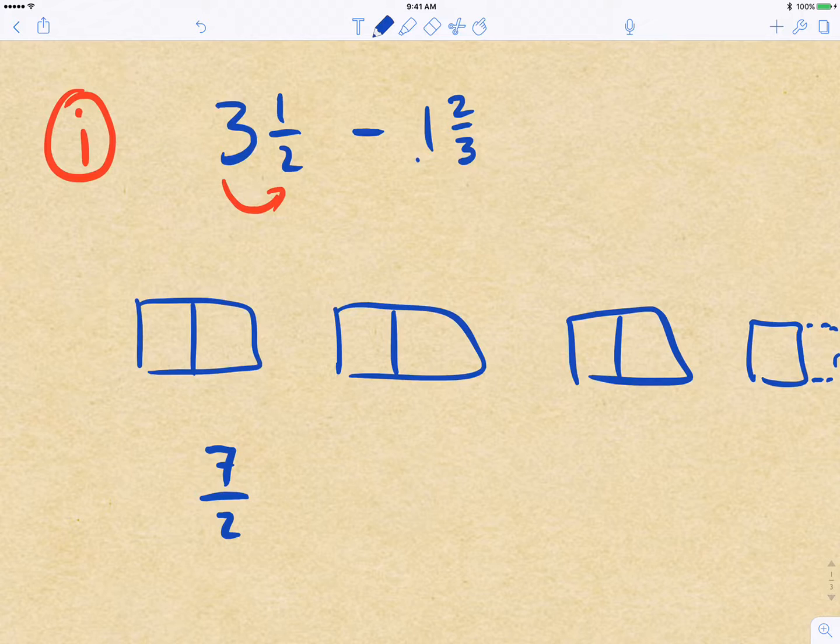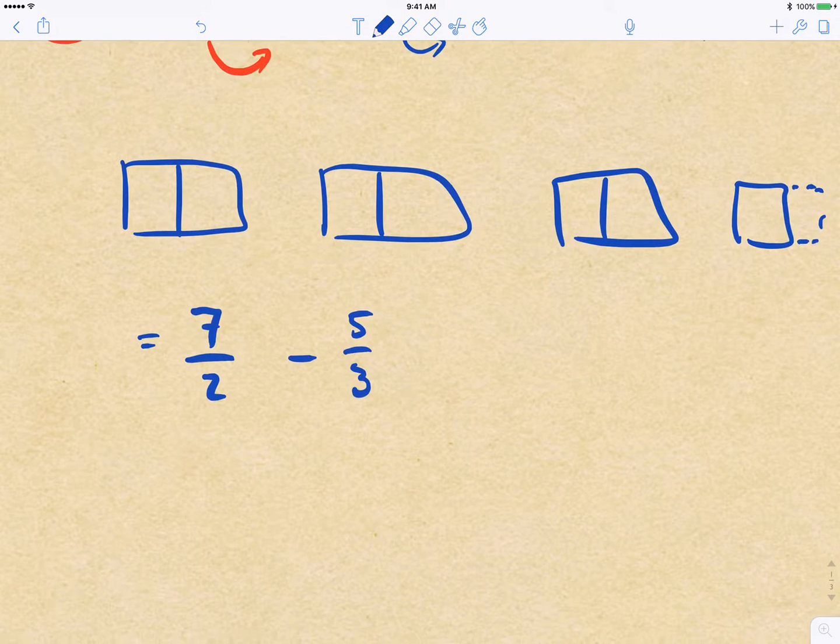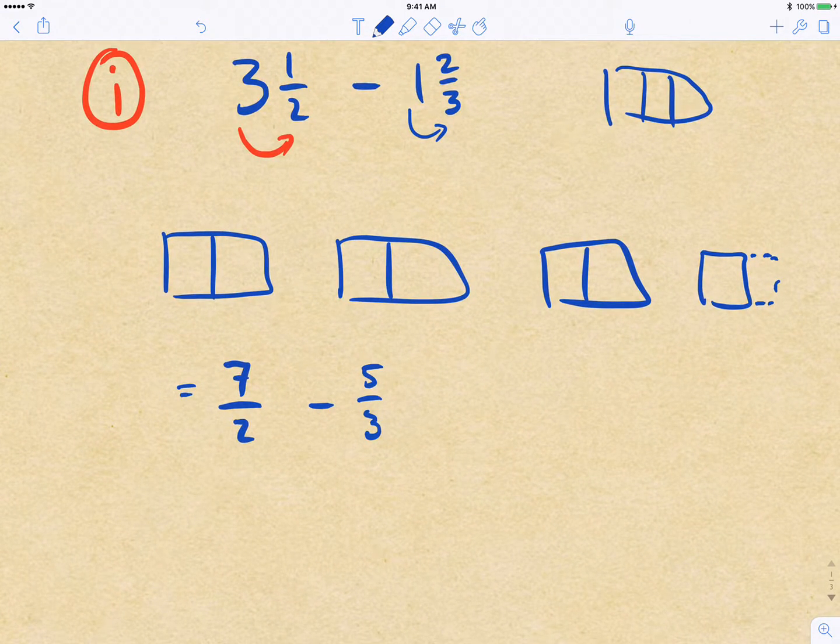And then 1⅔, I do 1 times 3 and then add it to 2. So 1 times 3 is 3, because in a whole I've got 3 thirds. So I've got those 3 thirds for my whole and then plus 2. So I've got minus 5 thirds. Now once I'm here, I can't subtract thirds from halves. So I need to have a common denominator.